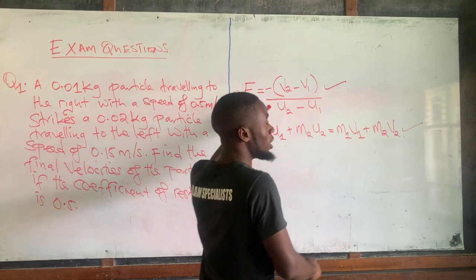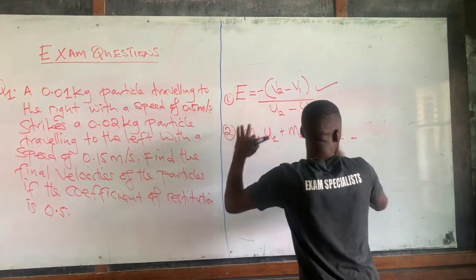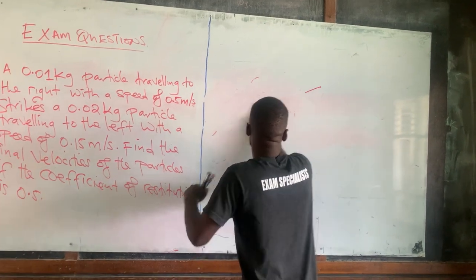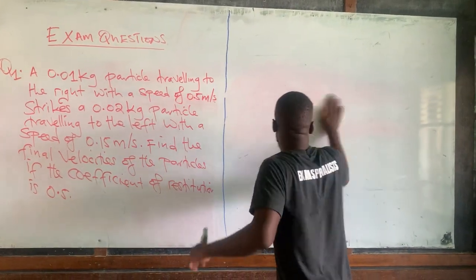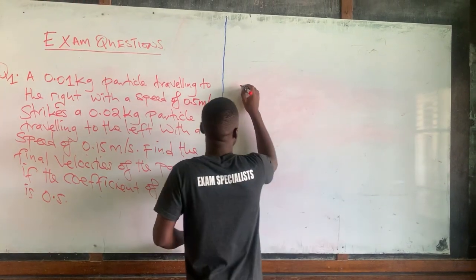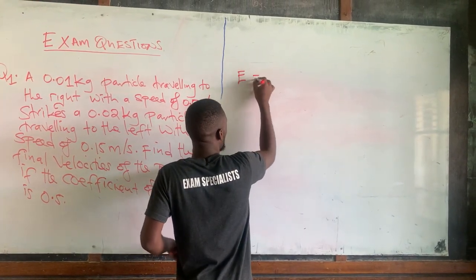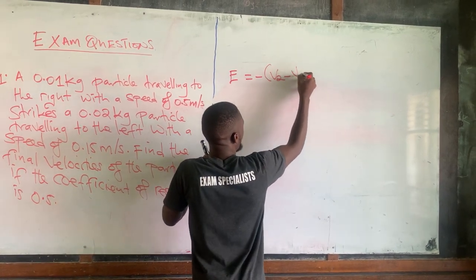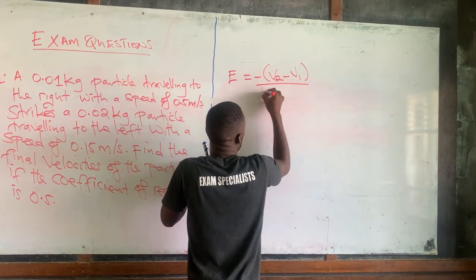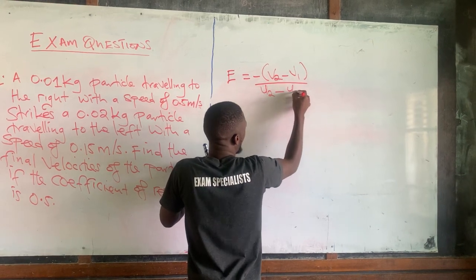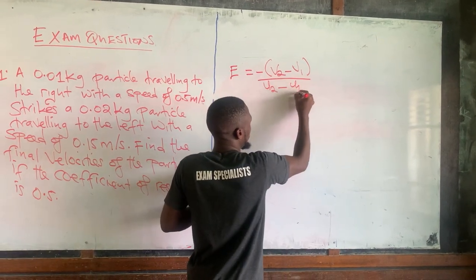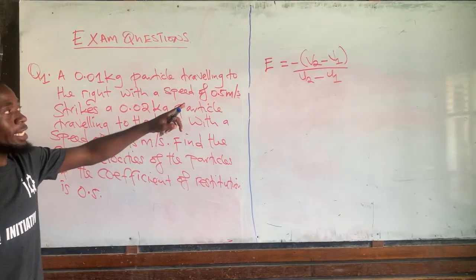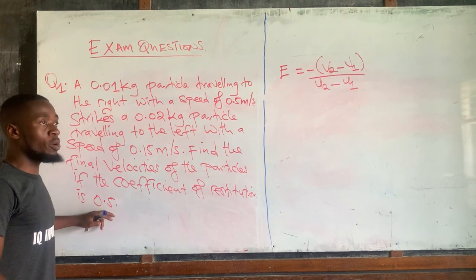First we will start by using the coefficient of distribution formula. The formula was: e equals negative (v2 minus v1) over (u2 minus u1). The coefficient of distribution e is given as 0.5, so we substitute: 0.5 equals negative (v2 minus v1) over (u2 minus u1).